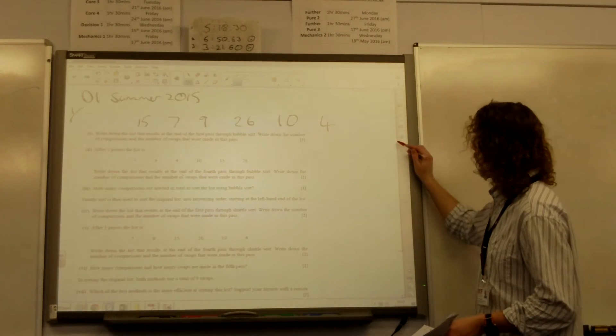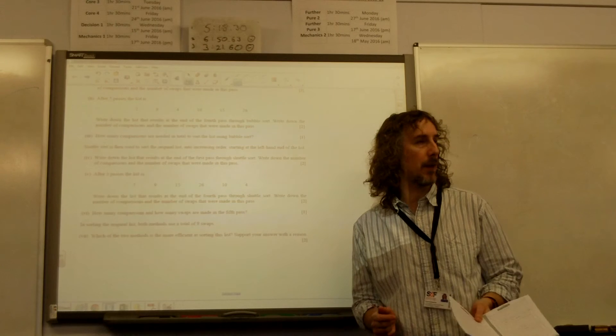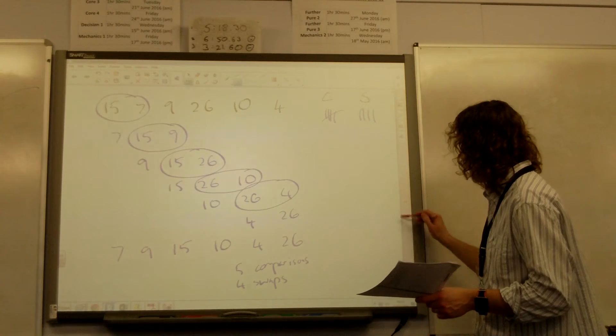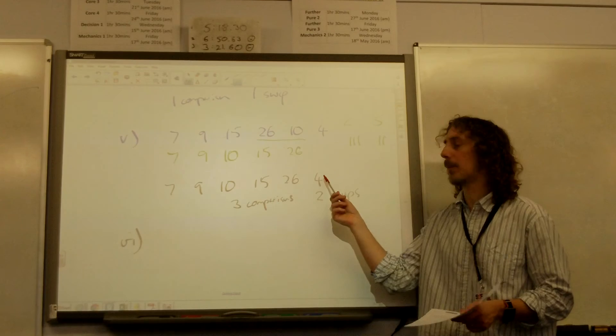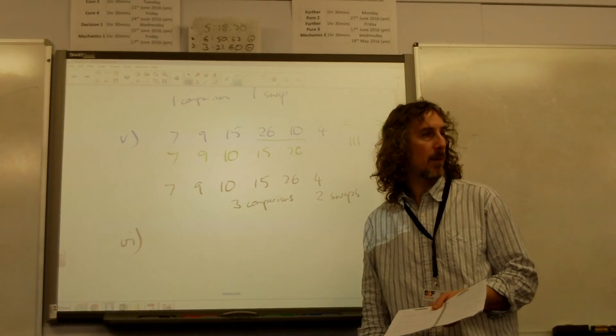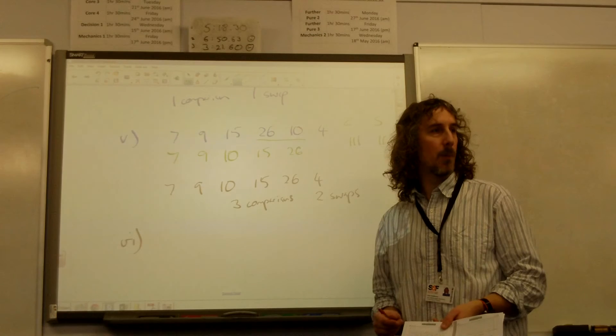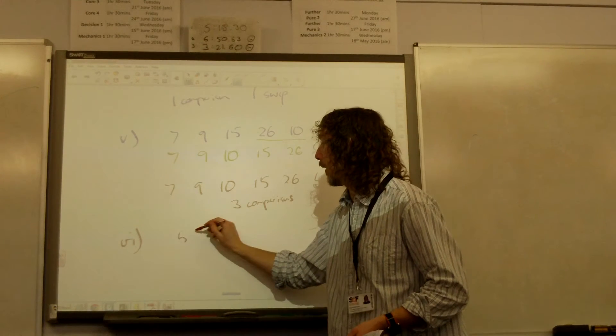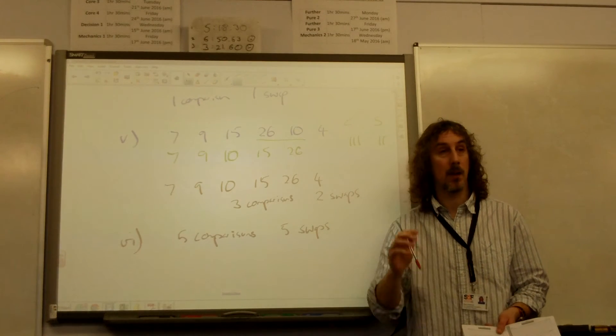Part 6: How many comparisons and how many swaps are made in the fifth pass? They didn't ask you to do the fifth pass, they just asked you how many comparisons and swaps would be made. Well, the crucial thing about the fifth pass is that that number 4 is the smallest number in the list. So that number 4, which is currently at the end of the list, is going to end up at the start of the list. This means when we're asked how many comparisons and swaps, we must be comparing and swapping everything as we go through the list. But because that's the smallest number and it's got to end up here, there must be five comparisons and five swaps. Every time we do a comparison, it's going to result in a swap to get back to the start.